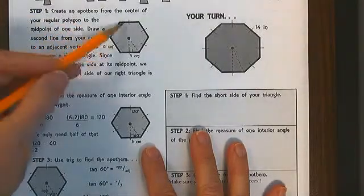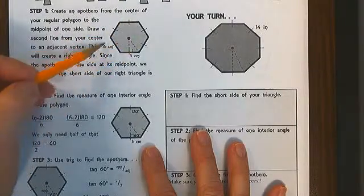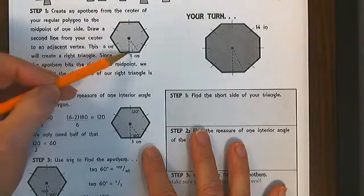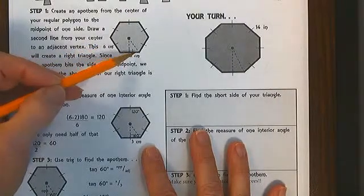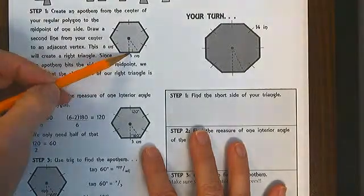They give us a hexagon with a side length of 6 centimeters. The apothem comes to the midpoint, so we know that this little segment here is 3 centimeters.